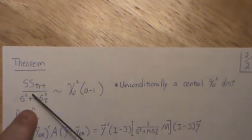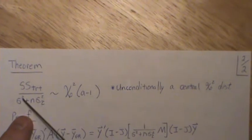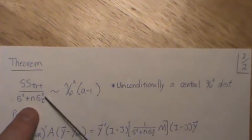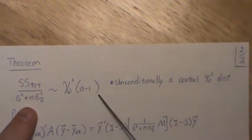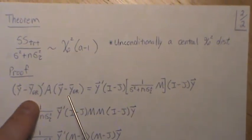So now what we wanted to show was the sum of squares treatment divided by sigma squared plus N times sigma tau squared is a central chi-squared with A - 1 degrees of freedom. And it's unconditionally a central chi-squared distribution, which to me is a little surprising in itself. But here's the proof.